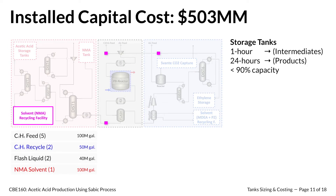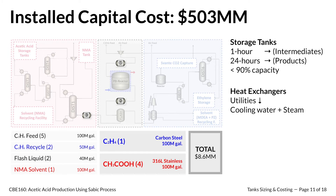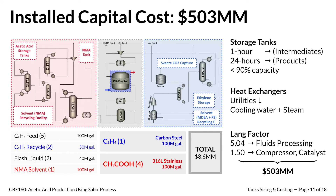Within our process, we accounted for storage tanks placed strategically throughout the system. We have 10 intermediate storage tanks as well as product storage tanks calculated with a 24-hour residence time. We also include 3 heat exchangers to decrease utilities costs by preheating or pre-cooling streams using steam or cooling water. To estimate total capital investment, our team assumed a Lang factor of 5.04 for fluid processing and a Lang factor of 1.5 specifically for our compressor and catalyst, resulting in $503 million for our installed capital costs.